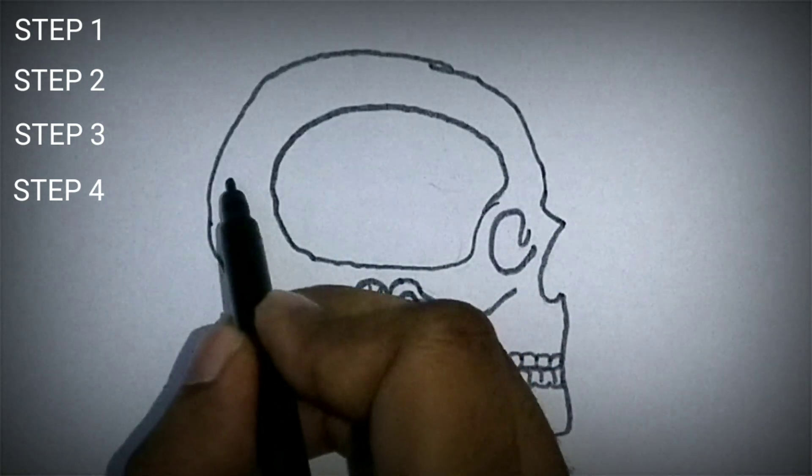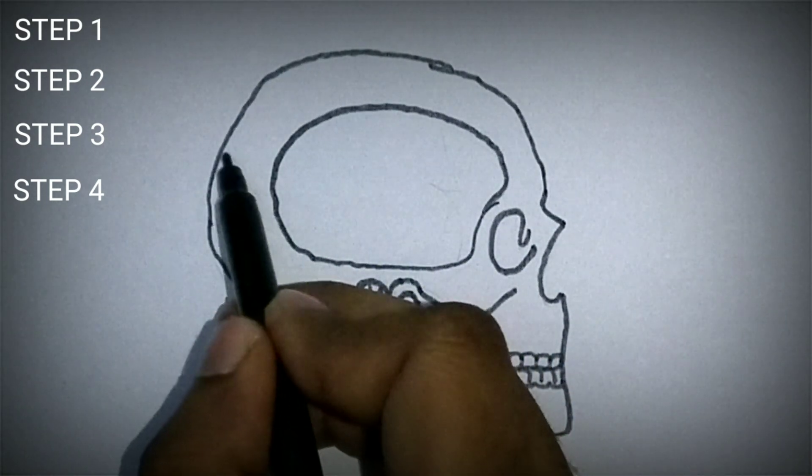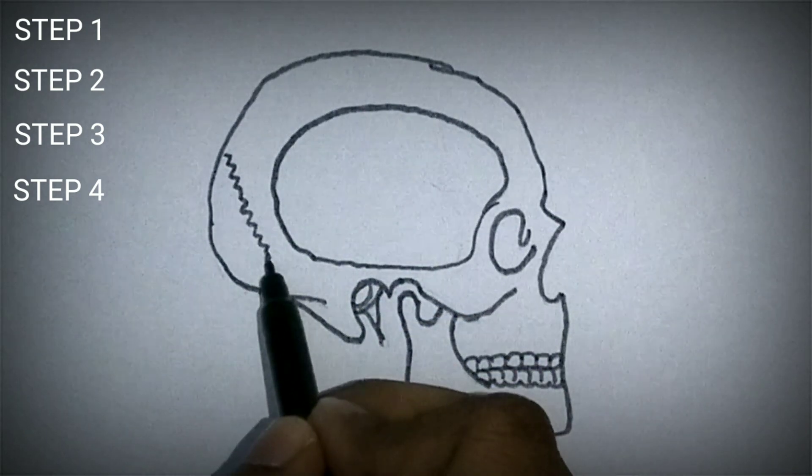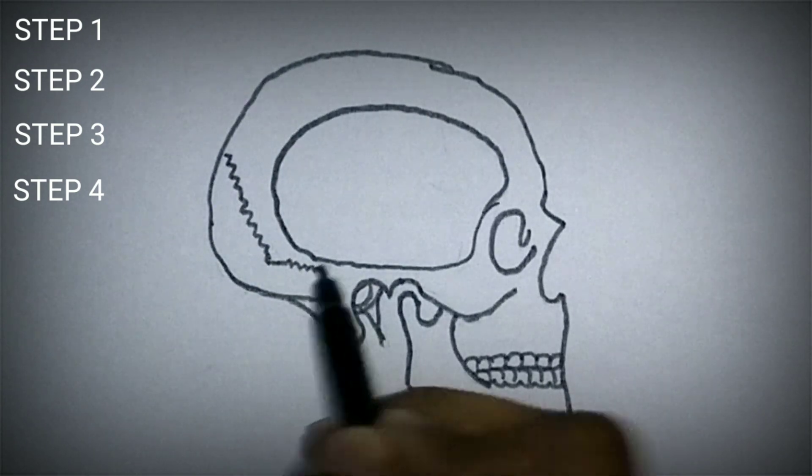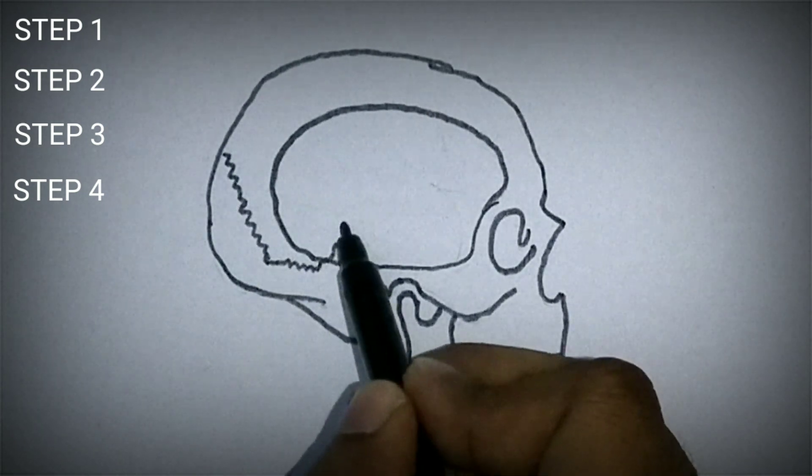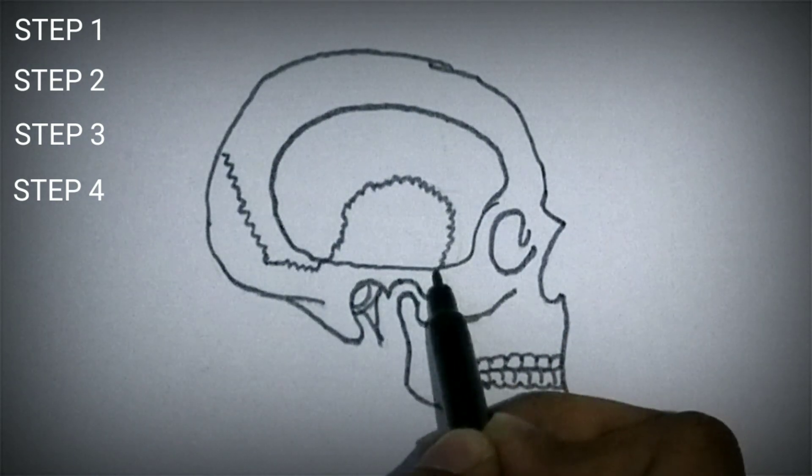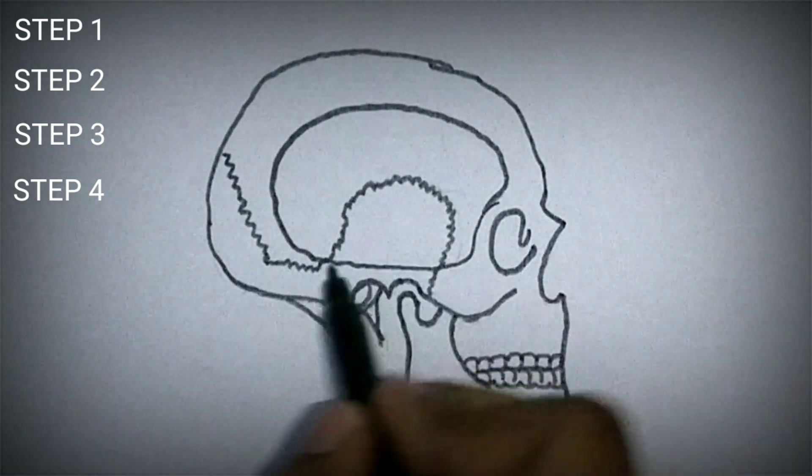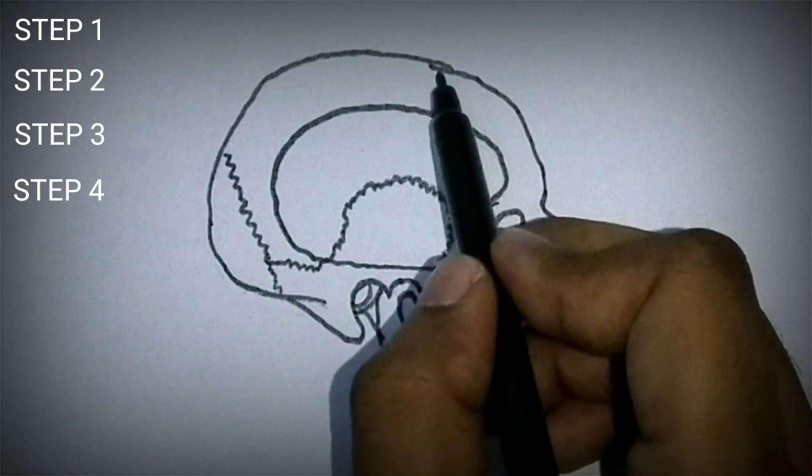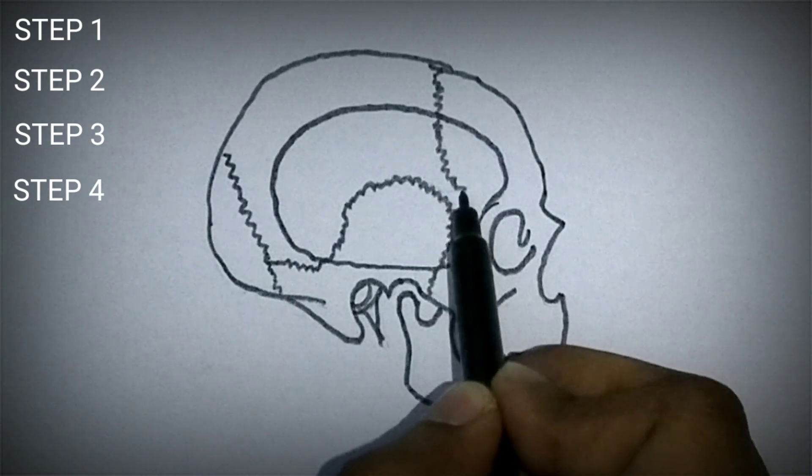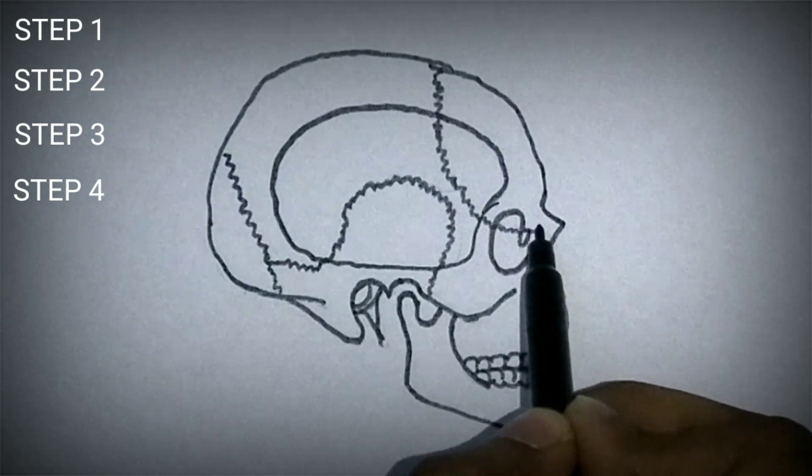Finally, draw some sutures to complete this. The lambdoid suture, the parieto-mastoid suture, the squamous suture, the occipito-mastoid suture and the coronal suture which separates the frontal bone from the rest of the skull bones.